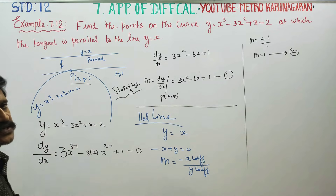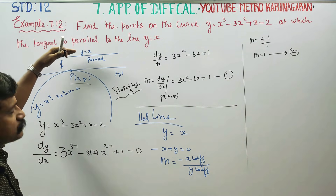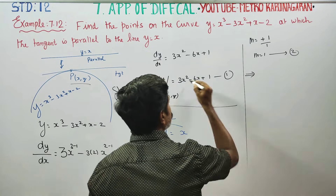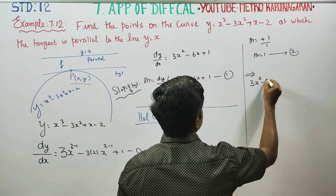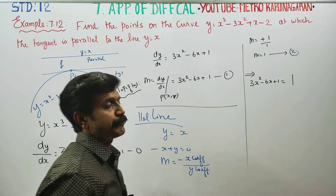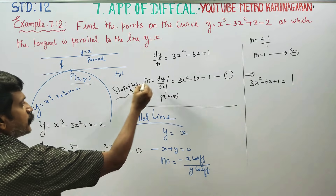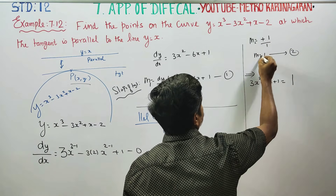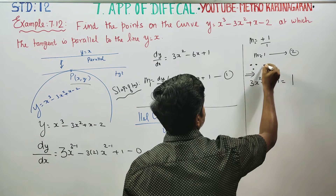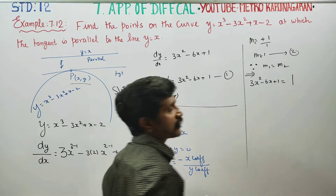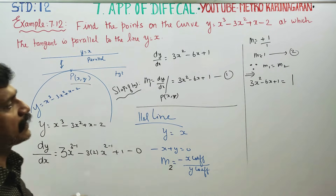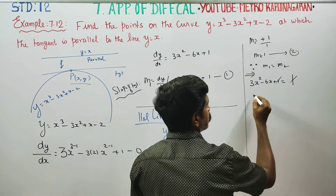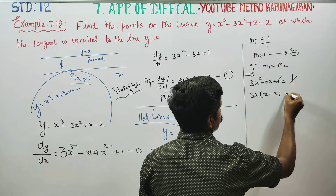Since the tangent is parallel to y equals x, the two parallel lines have equal slopes. Therefore m1 equals m2, which gives 3x² minus 6x plus 1 equals 1. The slope of the tangent is m1 and the slope of the parallel line is m2. Since the given lines are parallel, m1 equals m2, so 3x² minus 6x plus 1 equals 1.